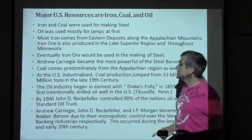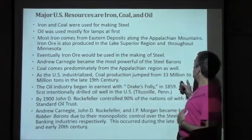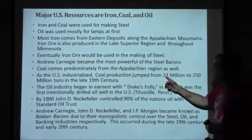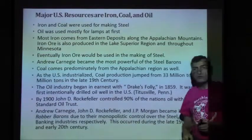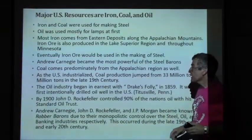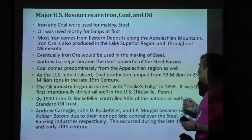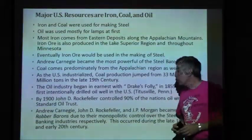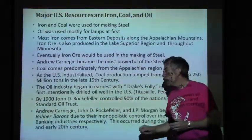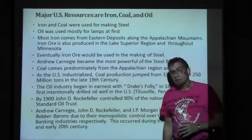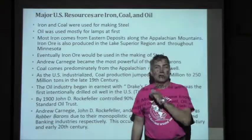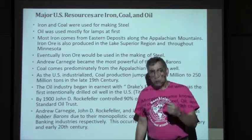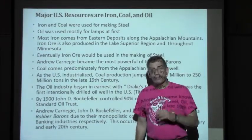Coal comes predominantly from the Appalachian region. Coal production jumped from 33 million to 250 million tons in the late 19th century — about a nine-fold increase. The oil industry began with Drake's Folly — Edmund Drake in Titusville, Pennsylvania in 1859 — the first intentionally drilled oil in the United States. By 1900, John D. Rockefeller controlled 90% of the nation's oil with his Standard Oil Trust. Imagine controlling 90% of the nation's oil — that was John D. Rockefeller, the same family as Rockefeller Center and Vice President Rockefeller under Gerald Ford.